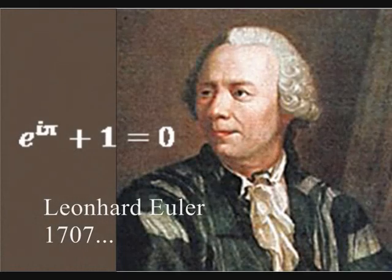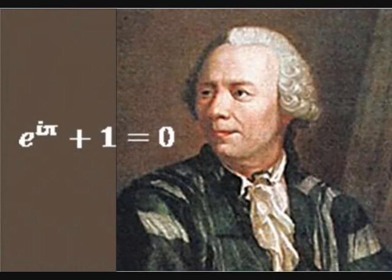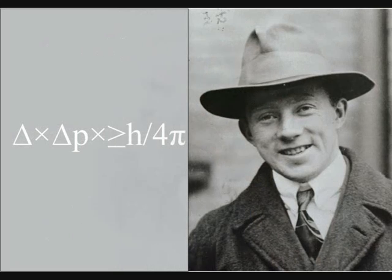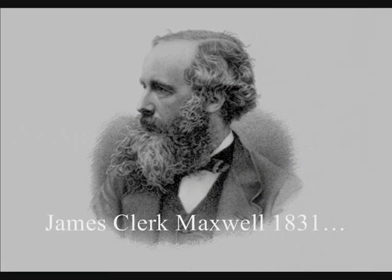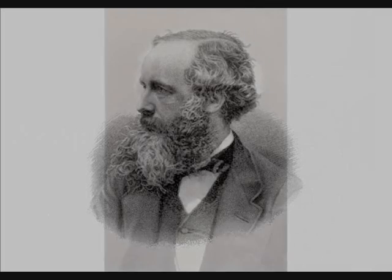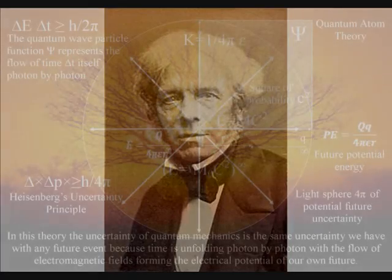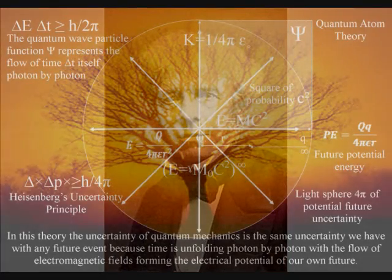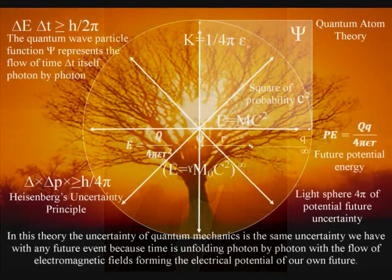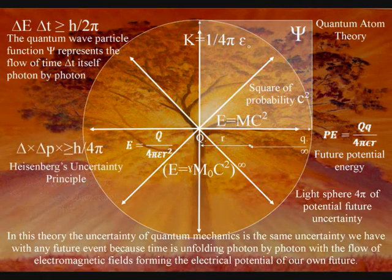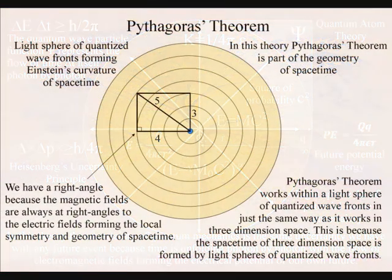This video puts forward the idea that only an infinity of possibilities could form the diversity and complexity of life. This theory is based on the mathematics and physics of some of the greatest minds the world has ever seen. It explains a universal process of energy exchange formed photon by photon at the quantum level of the atoms, by the wave-particle duality of light, forming a dynamic process of spherical symmetry forming and breaking.